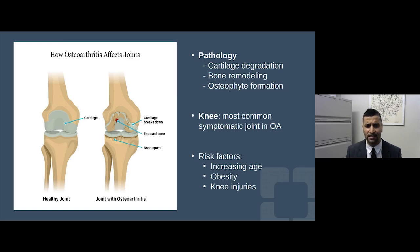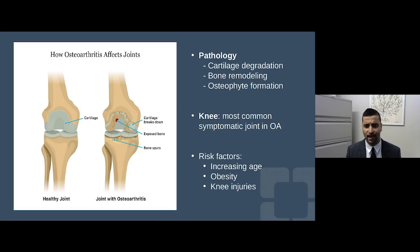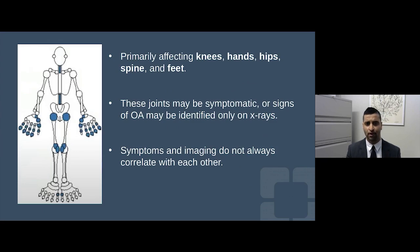We think about osteoarthritis affecting weight-bearing joints like the back, hips, and knees, with knee osteoarthritis being the most symptomatic. Risk factors for knee osteoarthritis include prior knee injury like meniscal tears, football injuries, advanced body mass index, and increasing age.